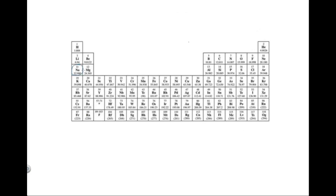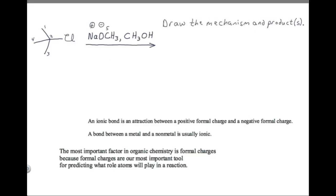Sodium is a metal from the left of the periodic table; oxygen is a nonmetal from the right of the periodic table. Elements further to the right want electrons more, and elements further to the left want electrons less. Since the oxygen wants electrons more, we can think of it as taking electrons away from the sodium and ending up with a negative formal charge. Since the sodium wants electrons less, we can think of it as giving up electrons to the oxygen and ending up with a positive formal charge. An ionic bond is an attraction between a positive formal charge and a negative formal charge.